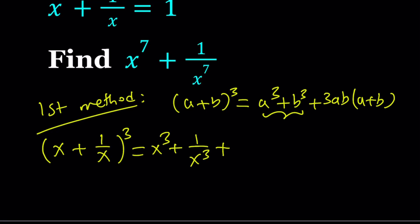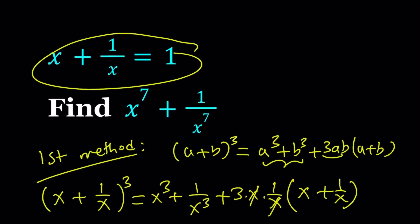Plus now 3ab. This is the beauty of it. Like 3 times x times 1/x - they're going to cancel out. So we're going to get 3 from here. Multiply by a + b, which is x + 1/x. Now, I know that x + 1/x is equal to 1. Therefore, if I cube it, it's going to be 1 again.